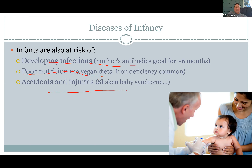Infants also suffer from nutritional issues — vegan parents who try to feed their kid just fruit can cause huge problems. Babies need fat, iron, and proteins. Some of this is unavoidable in countries in Africa and other places where you often see that the first child is fine, fed on breast milk, but as soon as the second child comes along, the first kid is kicked off the breast. That kid has nutritional deficiencies, going from protein-rich milk to just rice and carbs. They develop protein deficiencies once the second baby comes.